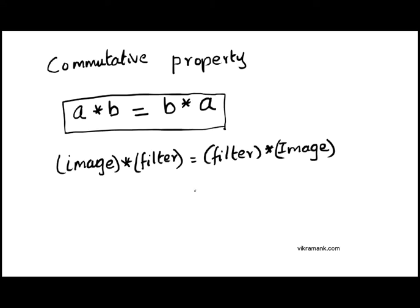Convolutional operation is commutative in nature. What it means is, convolving matrix A with B is same as convolving B with A. Suppose A is my image matrix and B is my filter matrix. Convolving image with a filter is same as convolving filter with an image.